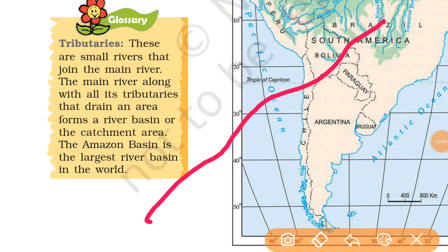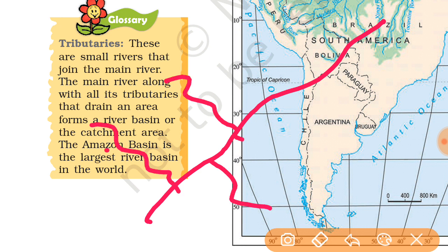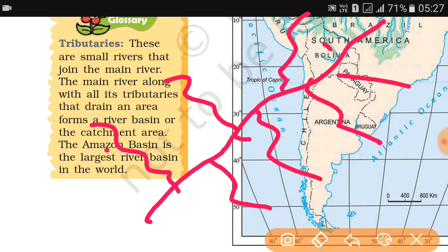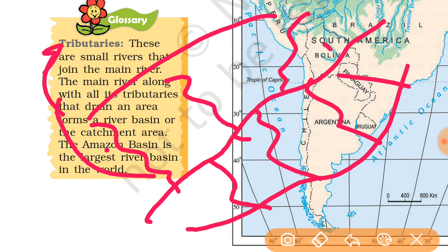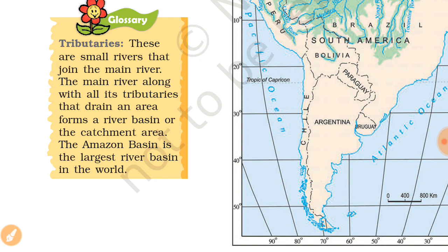This is a very big river. Small rivers came and joined the Amazon River - another river joined, and another. These small rivers which join the big river are called tributaries. The whole area which is draining into the rivers is called a drainage basin. The Amazon Basin is the largest river basin.